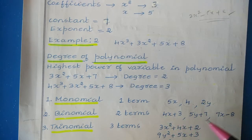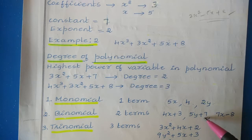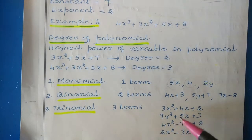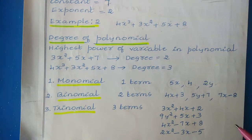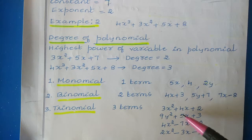A binomial has two terms — for example 4x + 3, 5y + 7, or 7x − 8; a minus sign is also allowed. A trinomial has three terms — for example 3x² + 4x + 2, 9y² + 5x + 3, or 4x² − 7x + 8. Both plus and minus signs are permitted. So this is the classification of polynomials based on the number of terms: one term is a monomial, two terms is a binomial, and three terms is a trinomial. This concludes the introduction to polynomials.